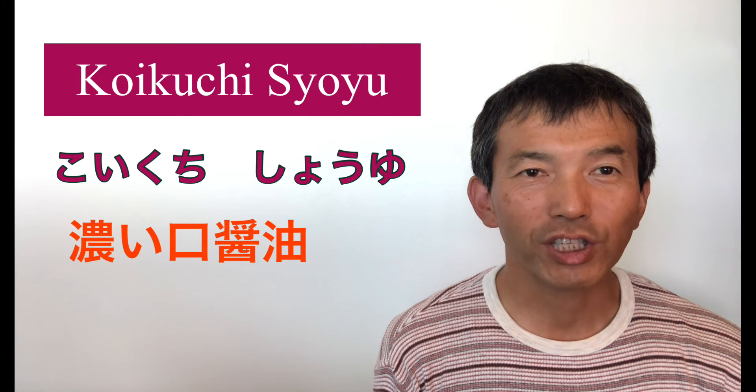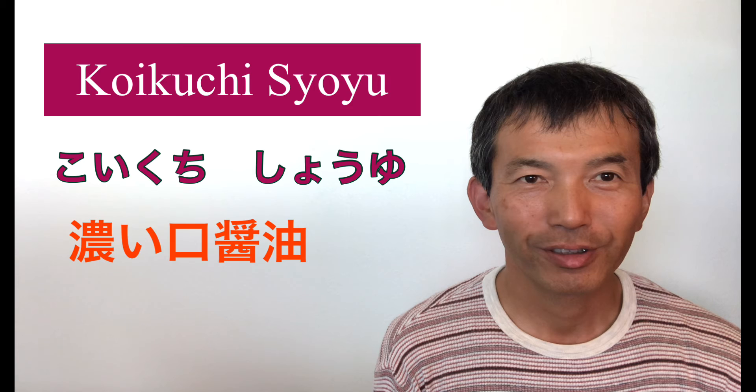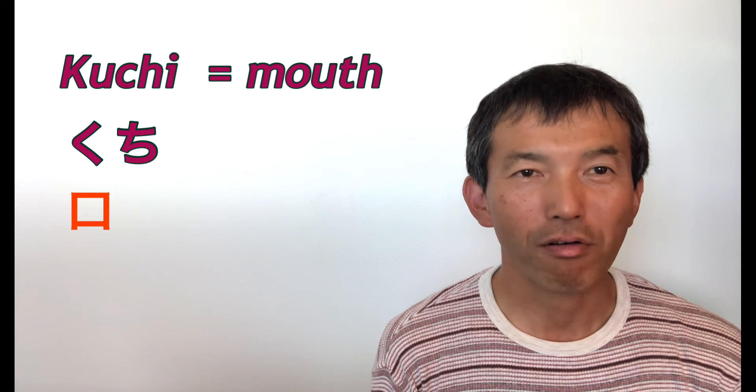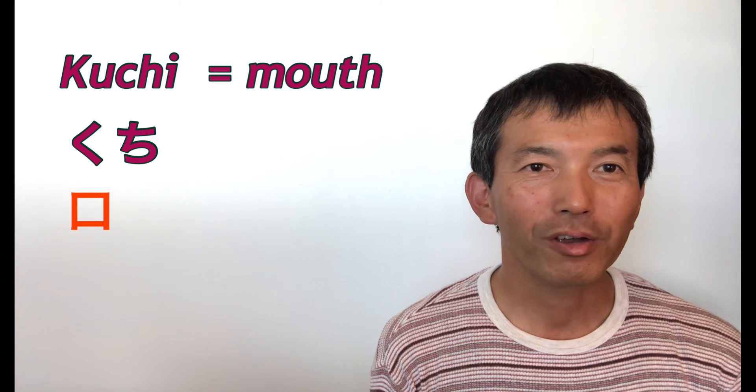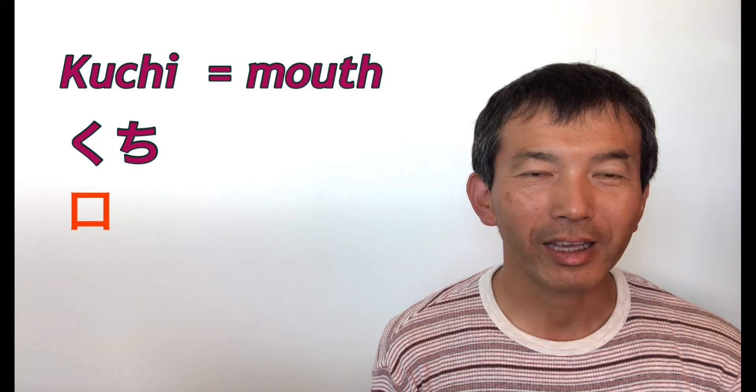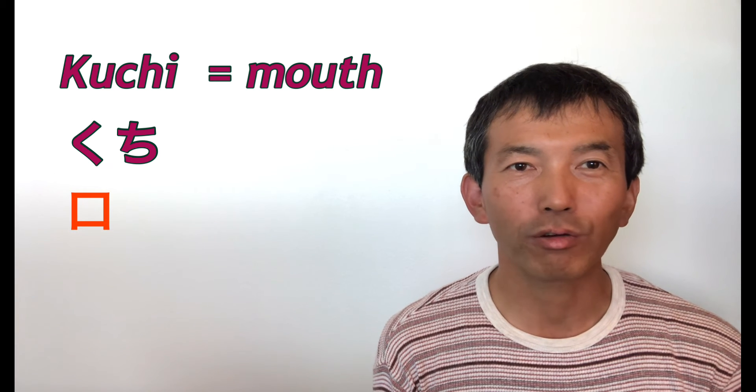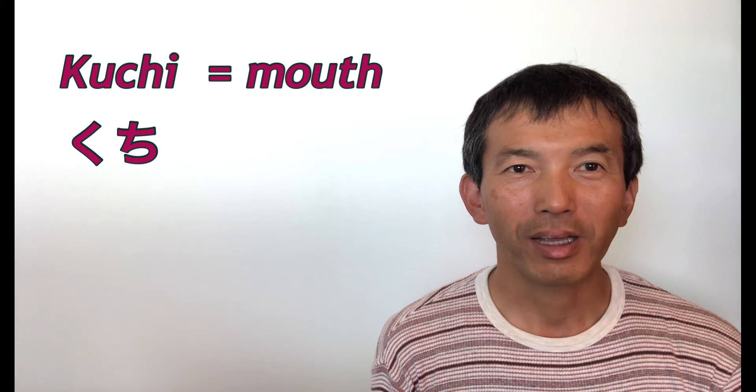Koi is an adjective. That means strong. Koikuchi shoyu. Kuchi literally means mouth. So, when you say koi and kuchi together, koikuchi means it's not a big mouth. It's strong taste.